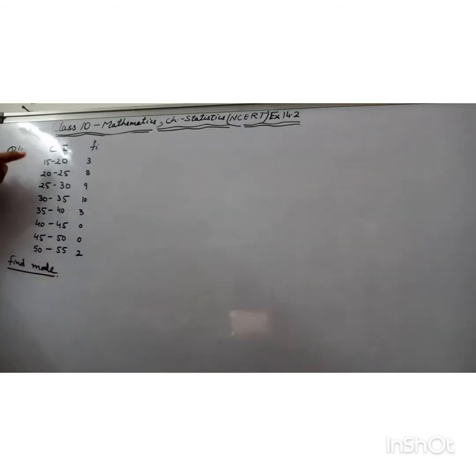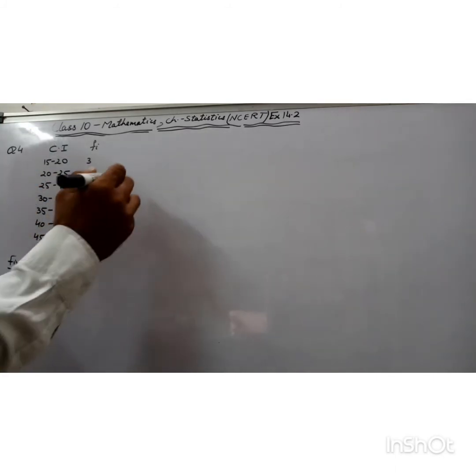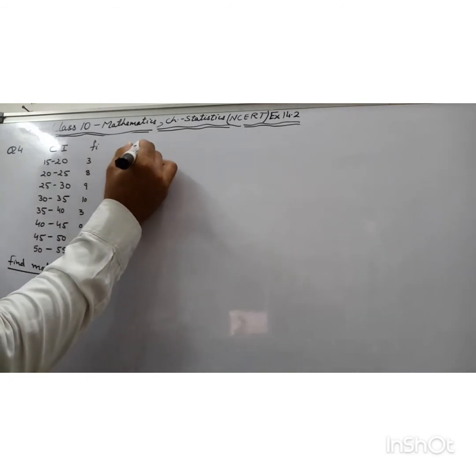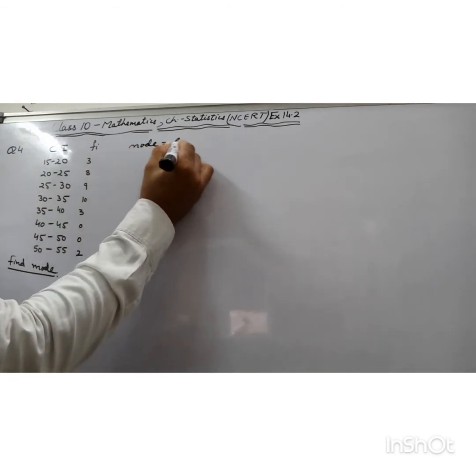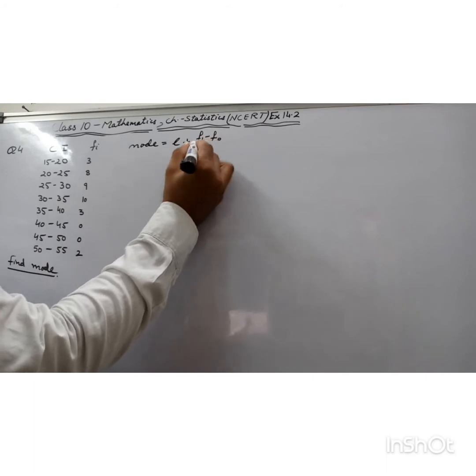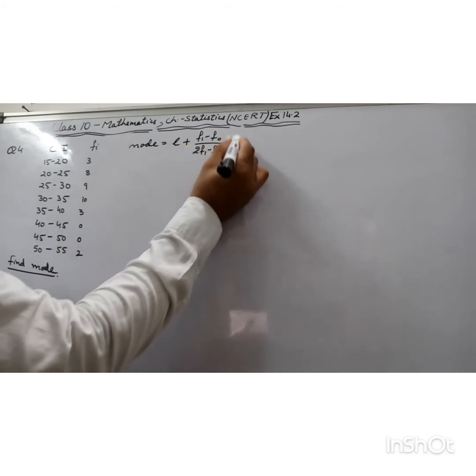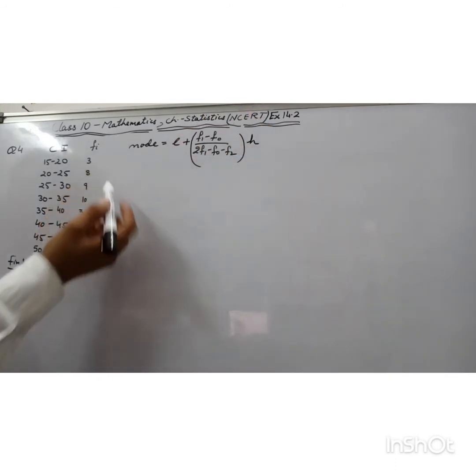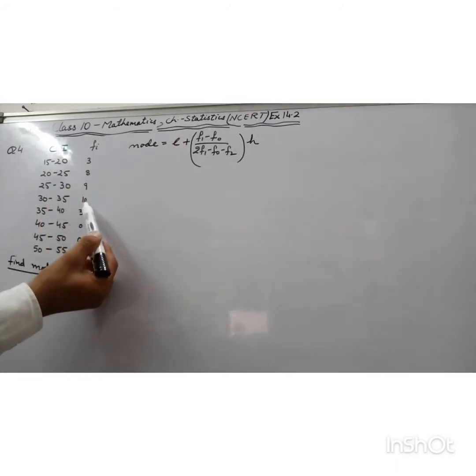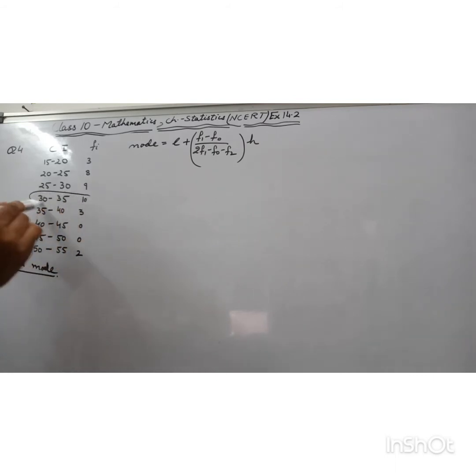Now let's find the mode for this question. Class interval and frequency: 5 to 15, frequency 6; 15 to 25, frequency 11; and so on; 55 to 65, frequency 5. The mode formula is L + [(f1 - f0) / (2f1 - f0 - f2)] × h. Here, the maximum frequency is 10, so this is our modal class.